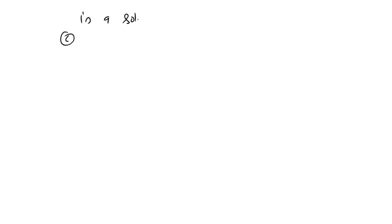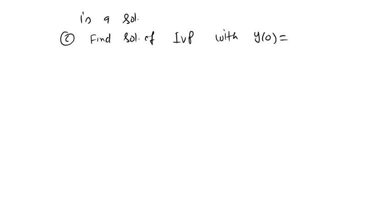Part (c): find the solution of the IVP with initial condition y(0) = (1/5)*[3, 22].